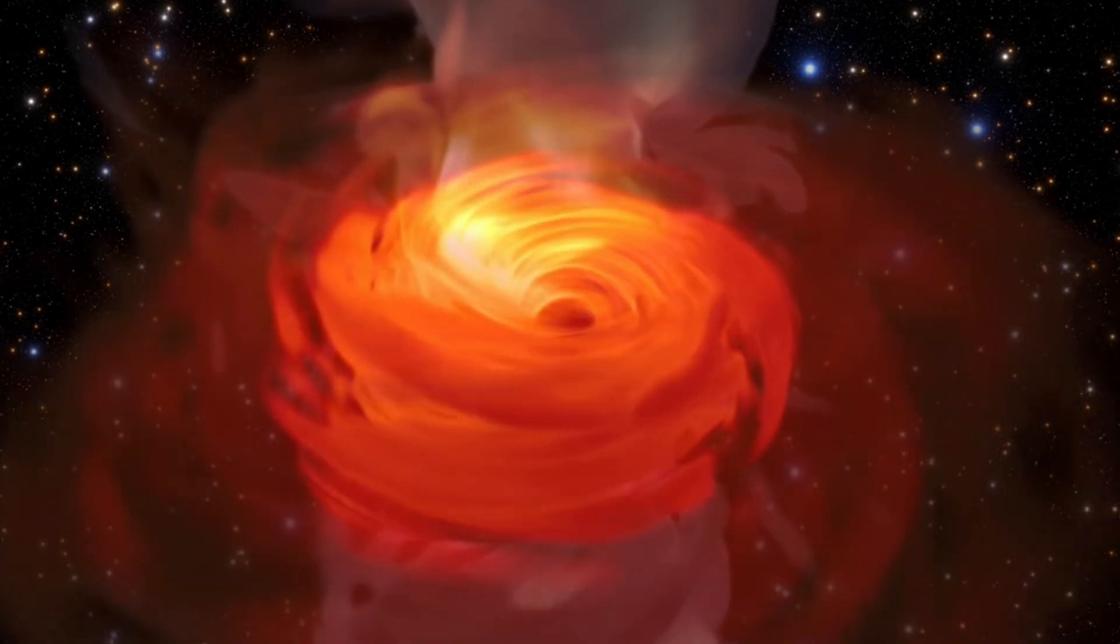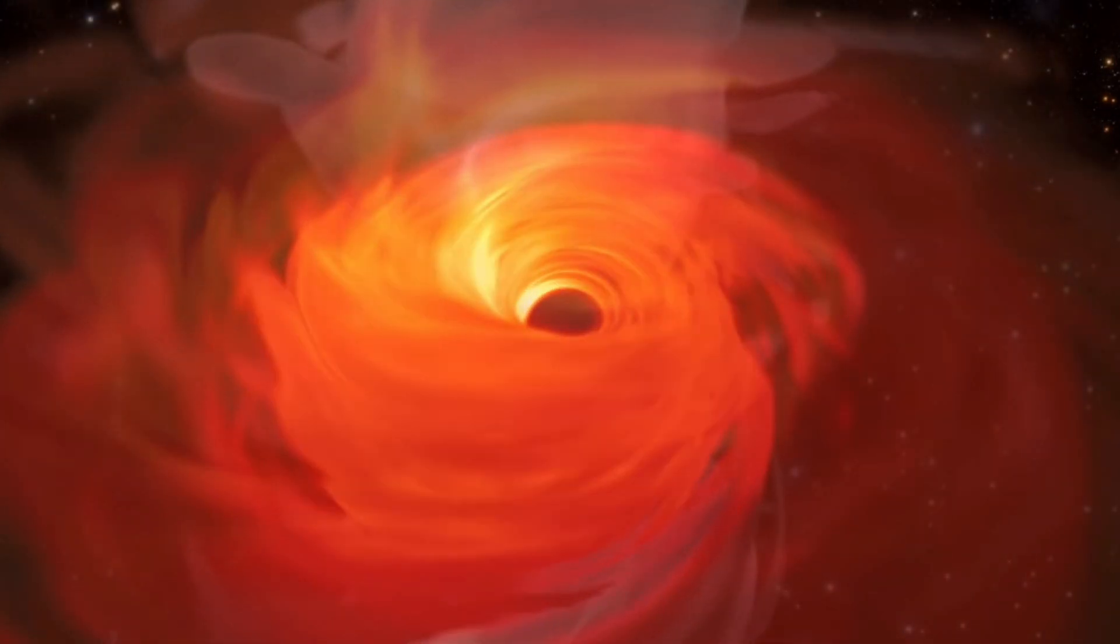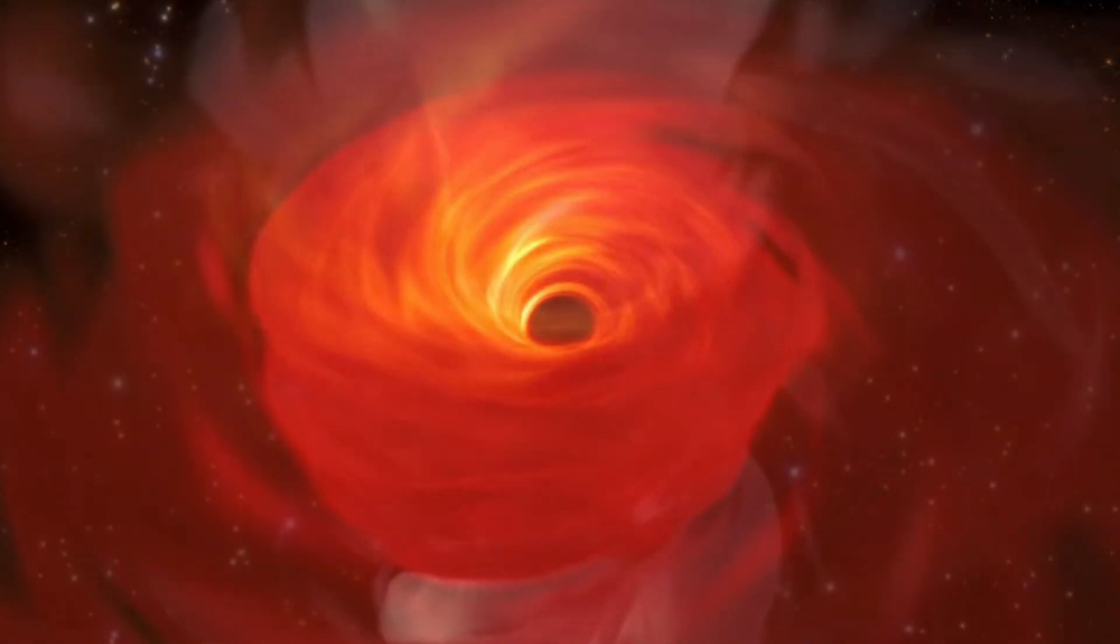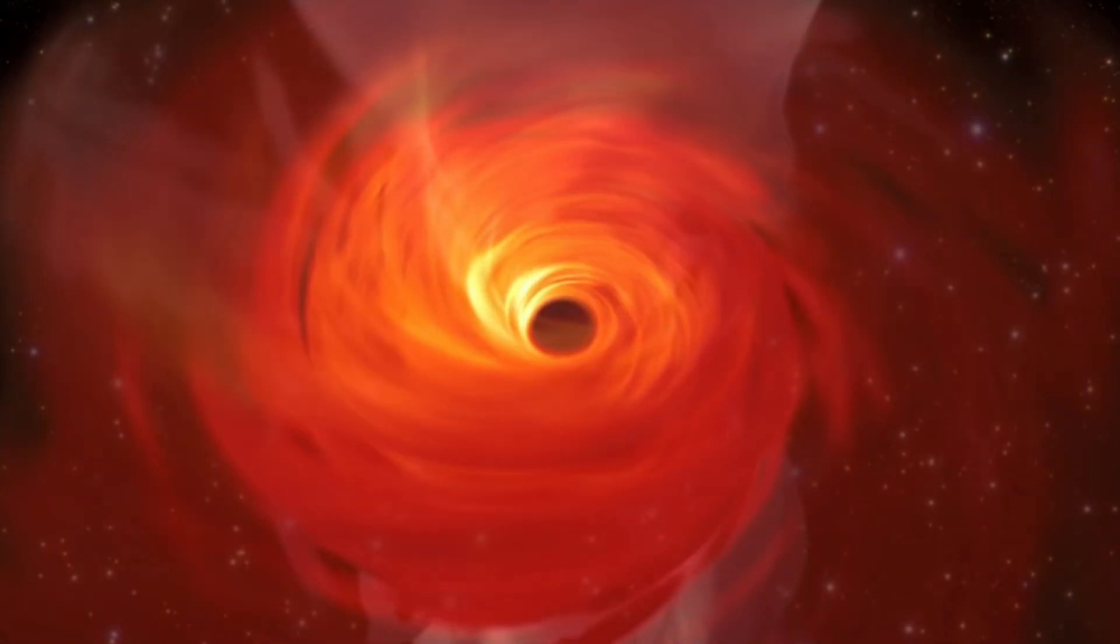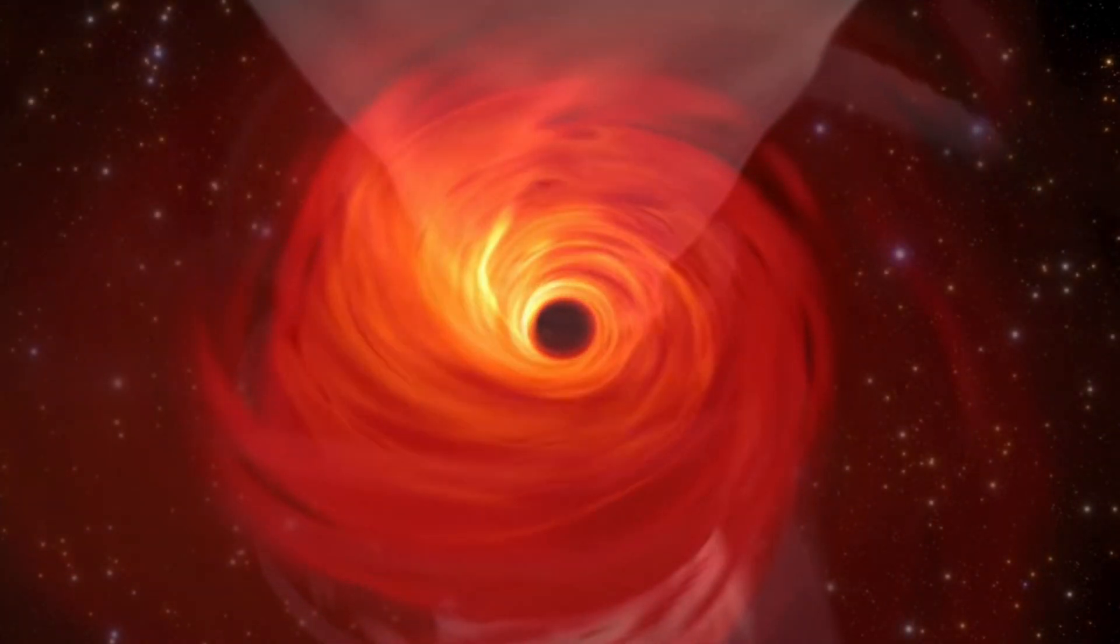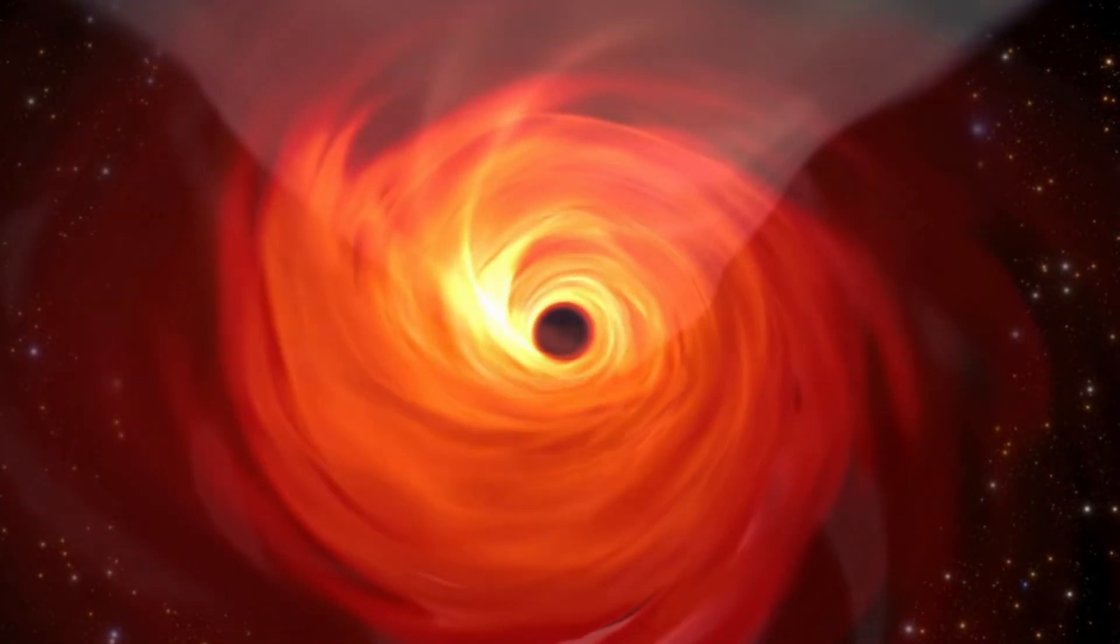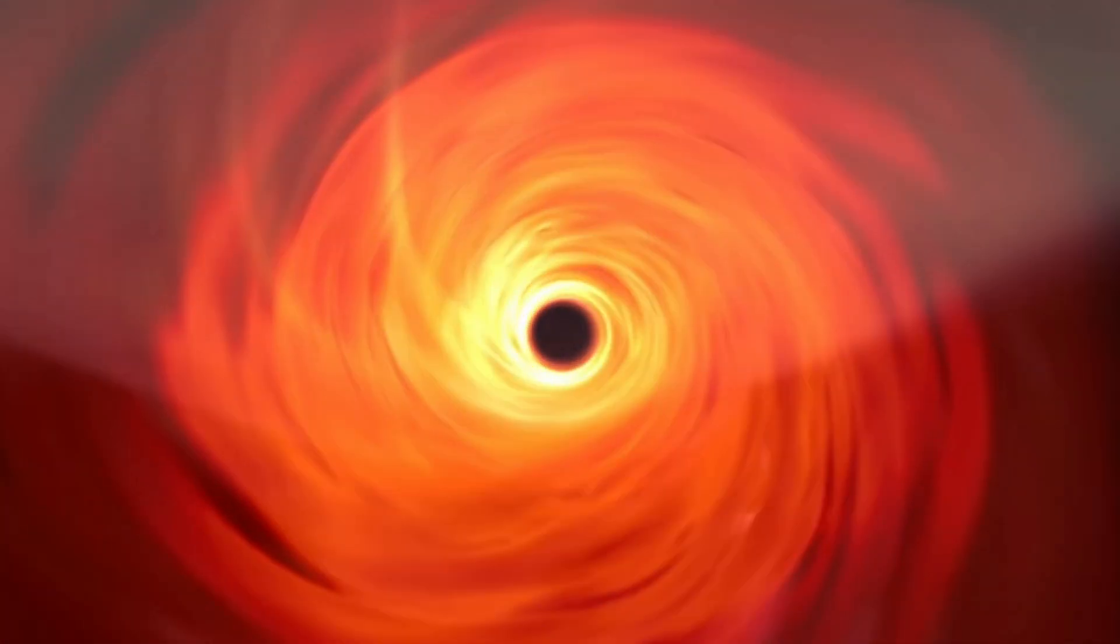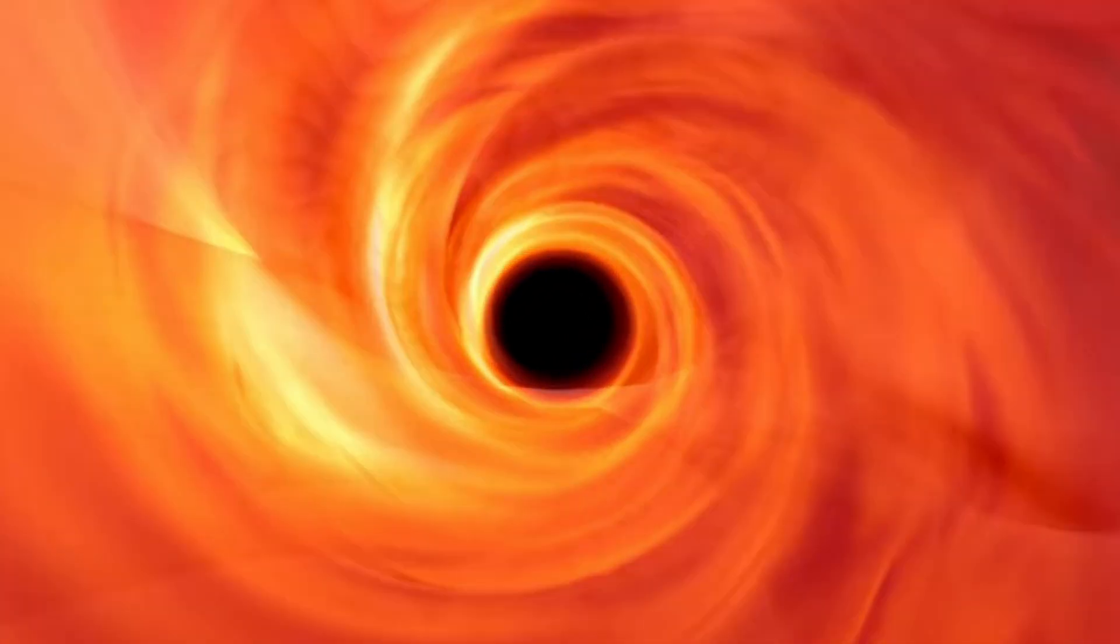The hypothetical appearance of a black hole in our solar system serves as a stark reminder of the delicate balance of our cosmic environment. While such an event is astronomically improbable, understanding its potential impact helps us appreciate the stability and relative safety of our current solar surroundings. It highlights the fragility of life on Earth and the importance of understanding and respecting the forces that govern our Universe.